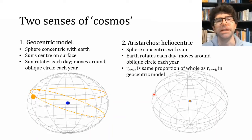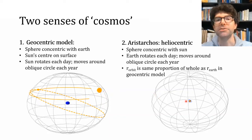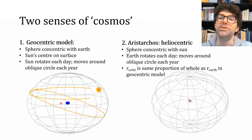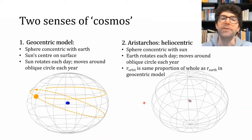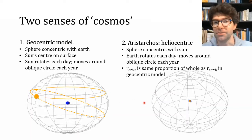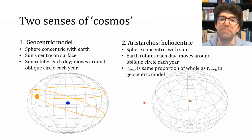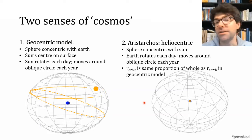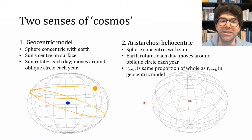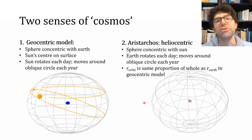Aristarchus seems to have believed that if the earth's orbit around the sun relative to the diameter of the whole cosmos corresponded to the earth's circumference relative to the whole cosmos in the geocentric model, then variation in angles from the earth to the stars — stellar parallax — would be too small to be detected. Indeed, it actually took until the 1830s for scientists to measure stellar parallax. So how many grains of sand would fill each of these cosmoses?